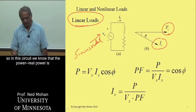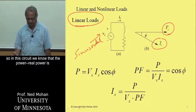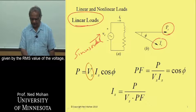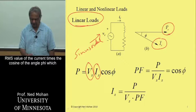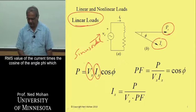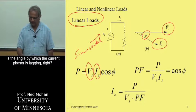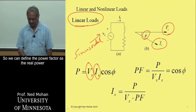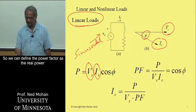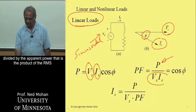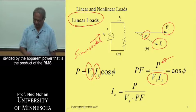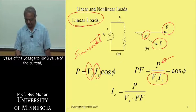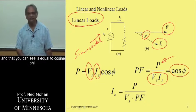So in this circuit, we know that the power, the real power, is given by the RMS value of the voltage, RMS value of the current, times the cosine of the angle phi, which is the angle by which the current phasor is lagging. And so we can define the power factor as the real power divided by the apparent power. That is the product of the RMS value of the voltage to RMS value of the current, and that you can see is equal to cosine phi.